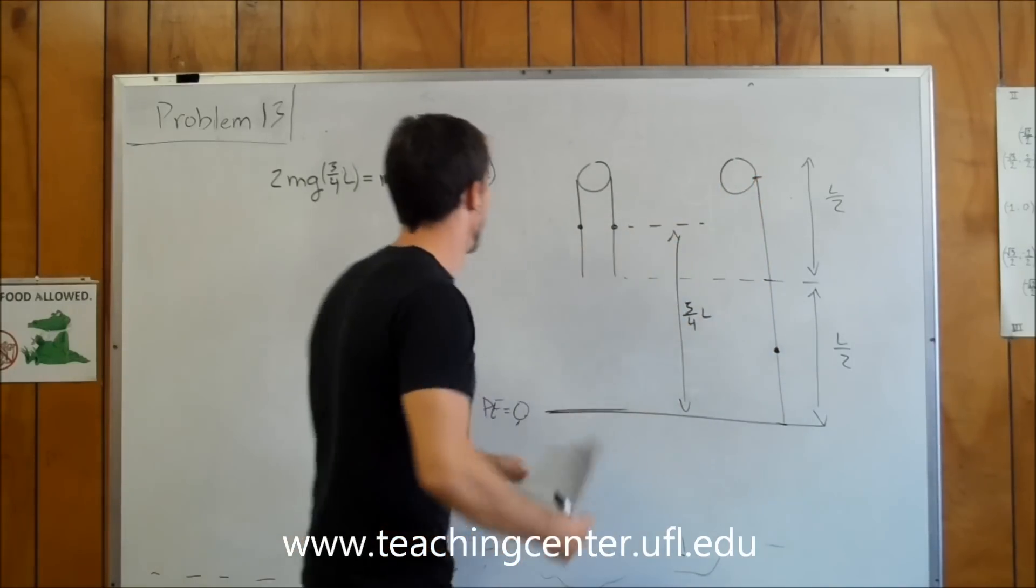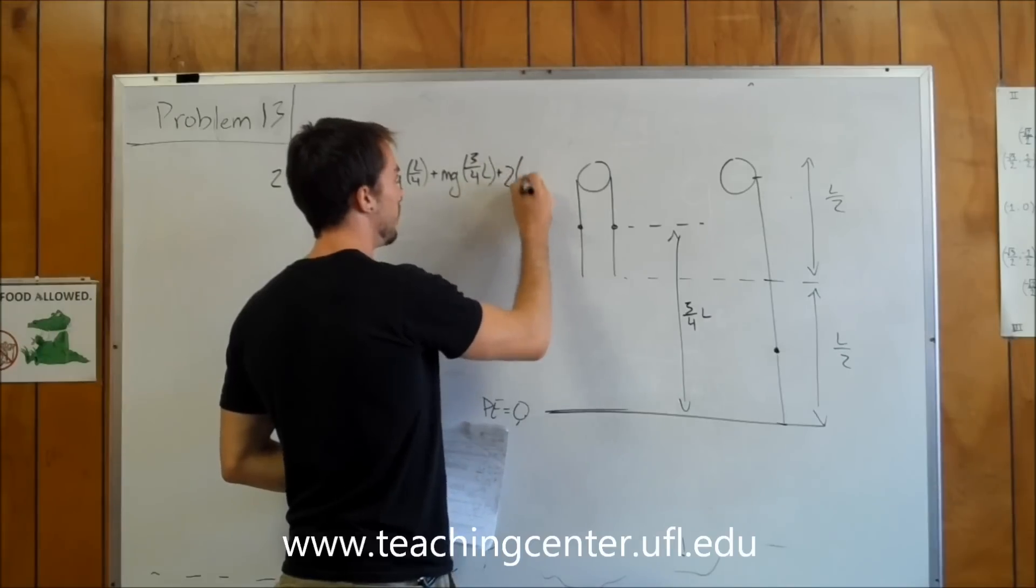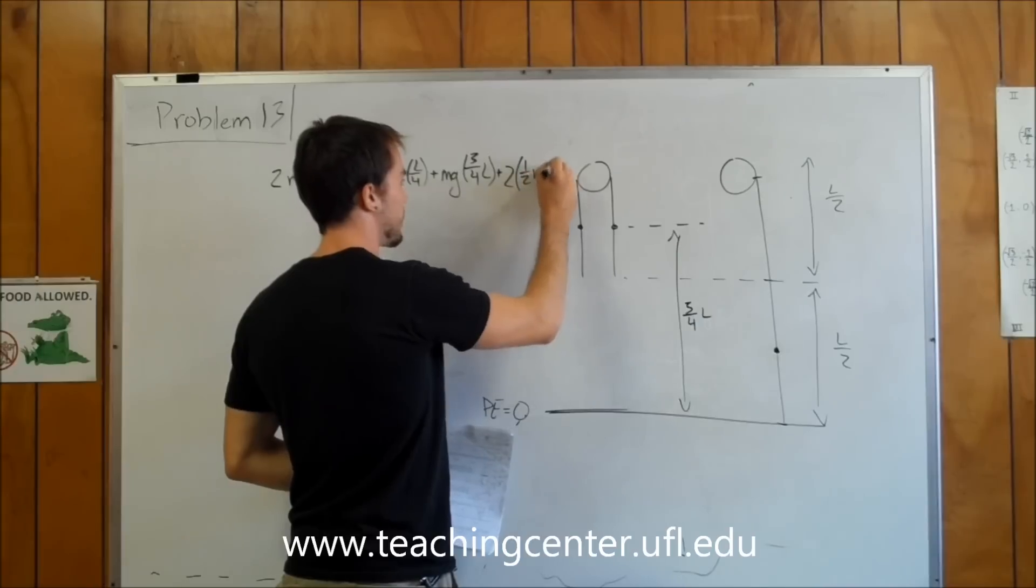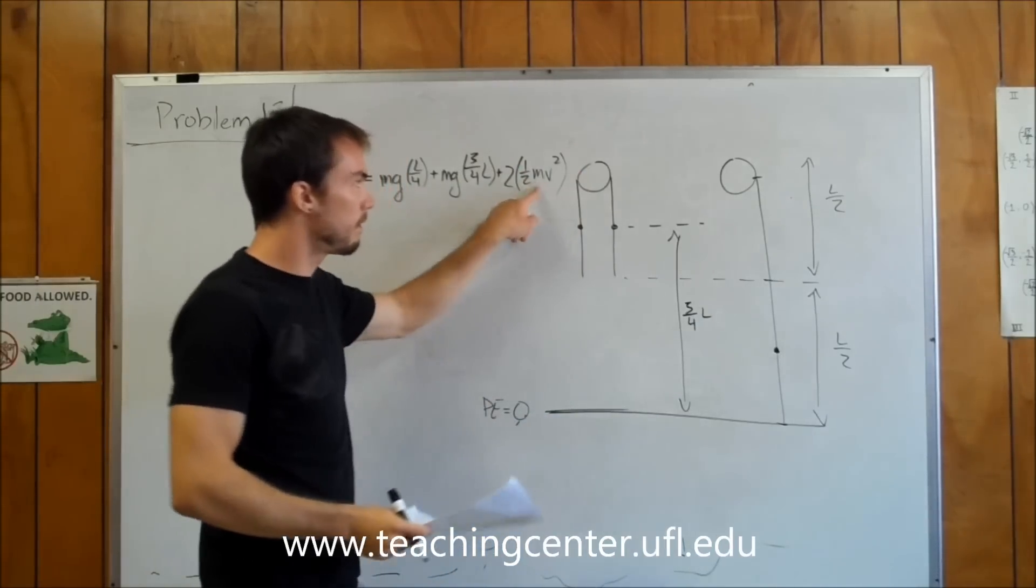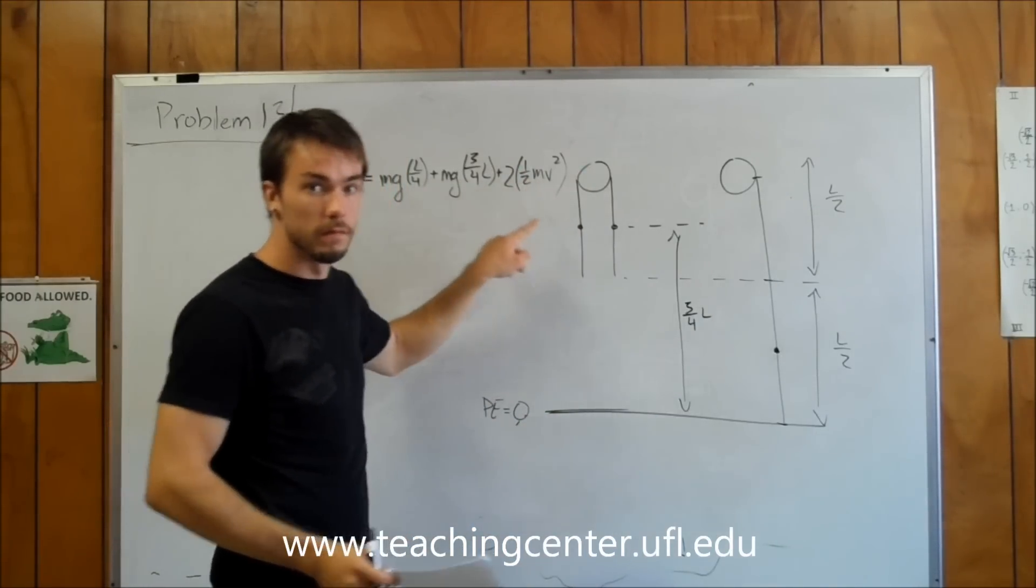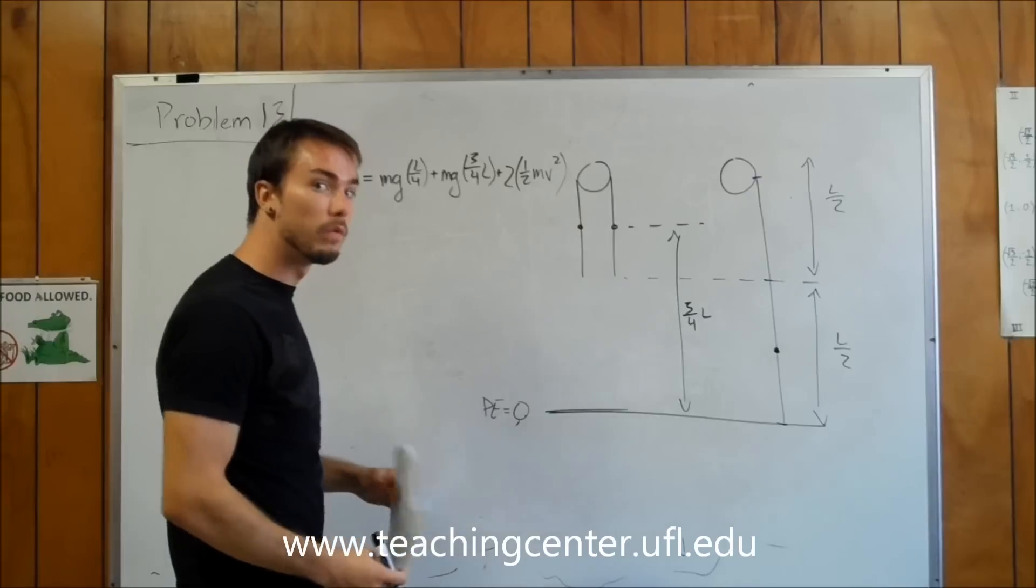But you have to include it twice because we're looking at this rope separate from this rope. So we're going to have two kinetic energies - same velocity, same mass, but we have two of them because we separated it into two ropes.